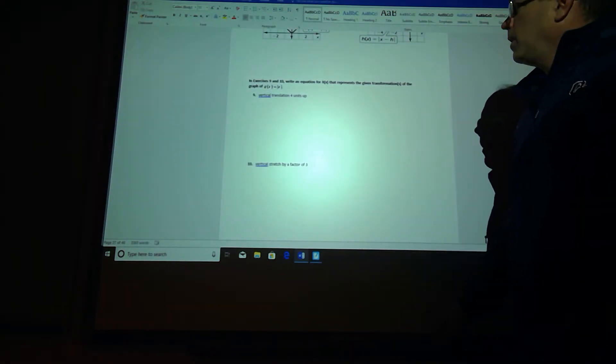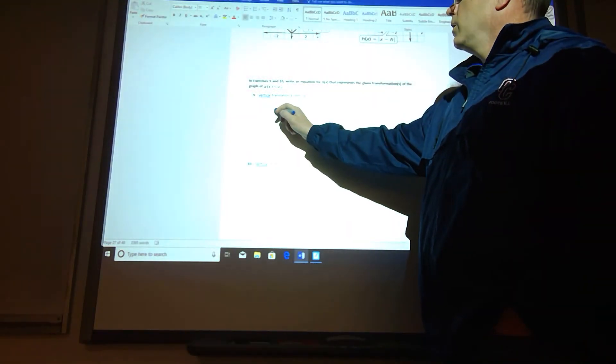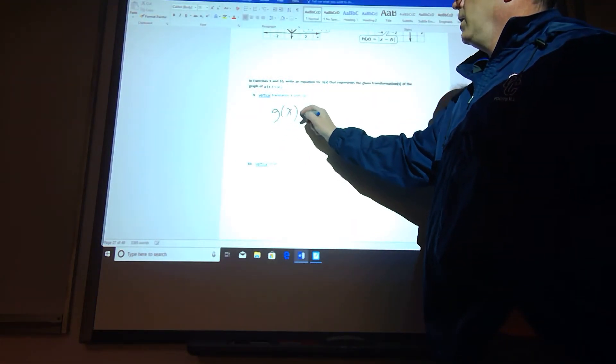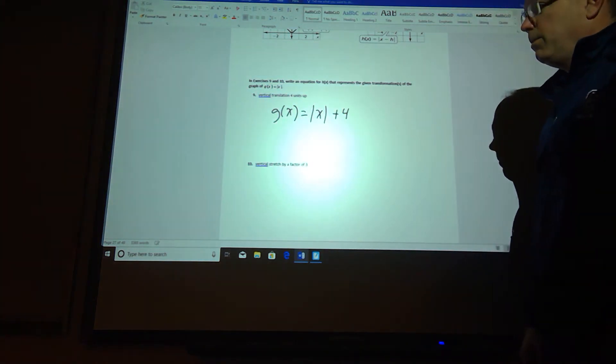Number 9, we want to write the absolute value graph with a vertical translation up 4. So our new graph is going to be g at x is equal to the absolute value of x, and then we're going to have a plus 4 outside of it because we moved up.